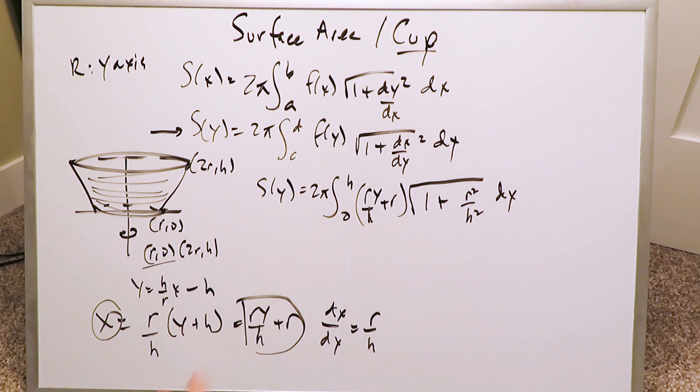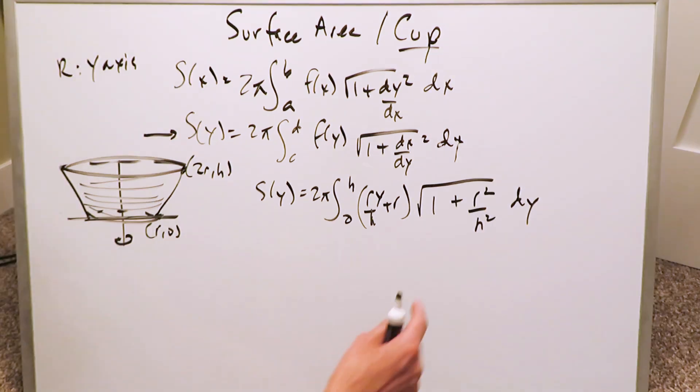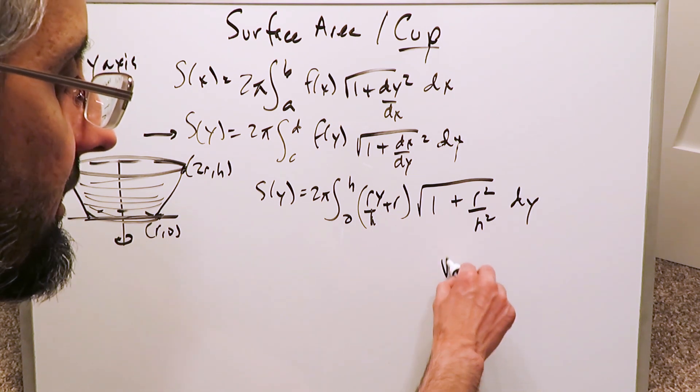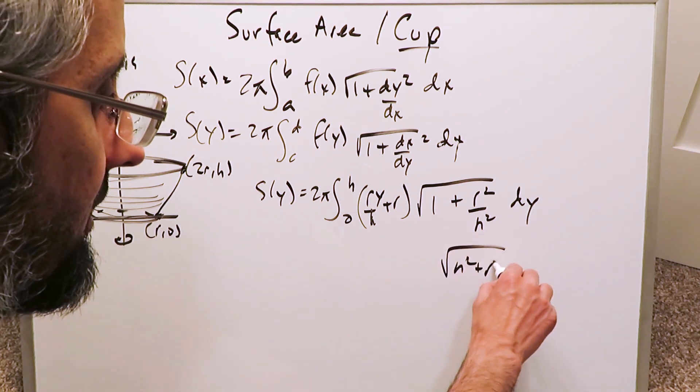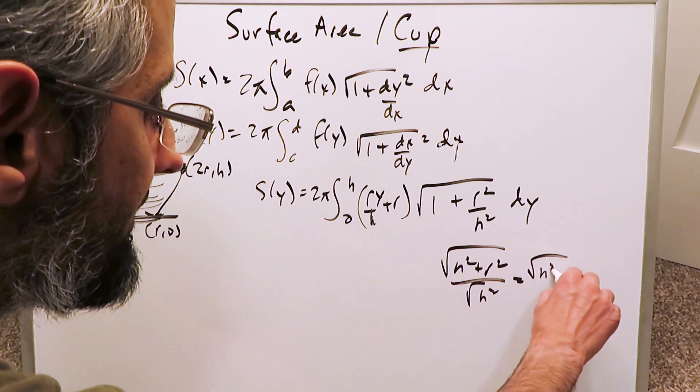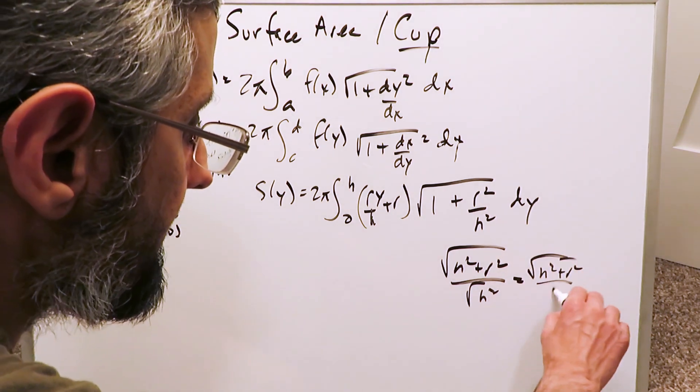And that will take us to our completion. This area right here can easily be solved, it's not hard. When you solve this out here on the side, you'll have (h² + r²)/h². When you simplify, you basically have √(h² + r²) divided by h.